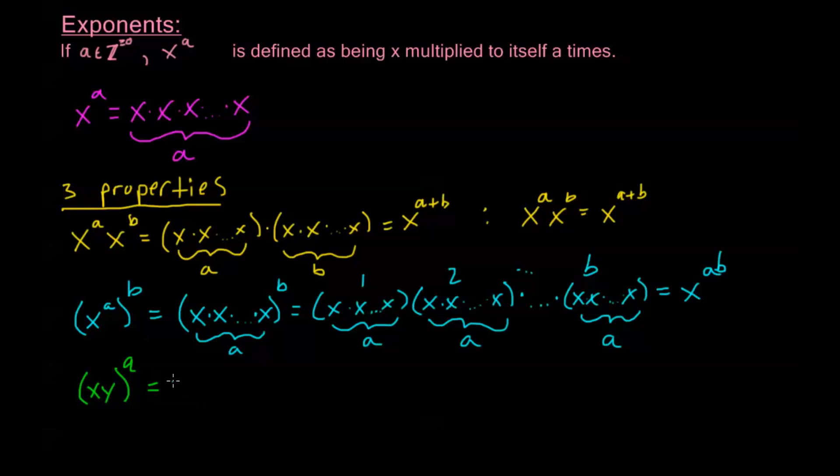Now this is probably familiar, we know we can distribute this, but just using our definition, let's go ahead and see why that's okay. By our definition, this is the same as x, y times x, y times x, y, going all the way until I have a sets of x, y. Now, we know that multiplication is associative here. So I can bring all of these x's all the way to the left and push all of the y's all the way to the right. I had a x, y's, so I have a x's. I have a x, y's, so I have a y's. So this is just going to be x to the a times y to the a.